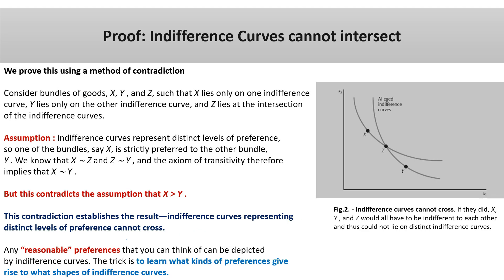As a formal proof summary, the steps we went through show how we proved that indifference curves cannot intersect. In many academic evaluations and professional entrance examinations, you may come across the application of this concept. The key intuition is to identify whether indifference curves can intersect — this is one of the key properties that holds throughout microeconomics whenever consumer-based applications from consumer theory are involved.